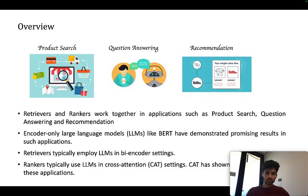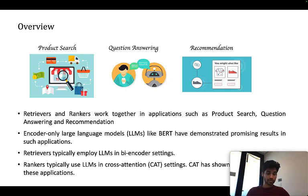Retrievers and rankers work together in applications such as product search, question answering, and recommendation. Encoder-only large language models such as BERT have demonstrated promising results in such applications. Retrievers typically employ LLMs in a bi-encoder setting while rankers typically use LLMs in cross-attention settings. Cross-attention transformers have shown promising results in these applications.